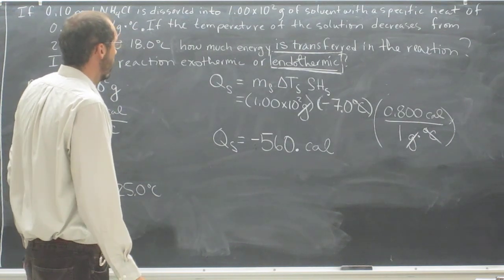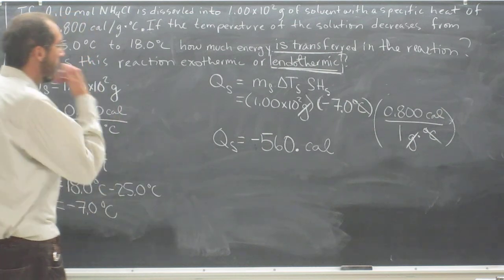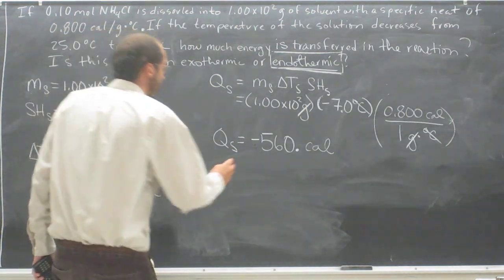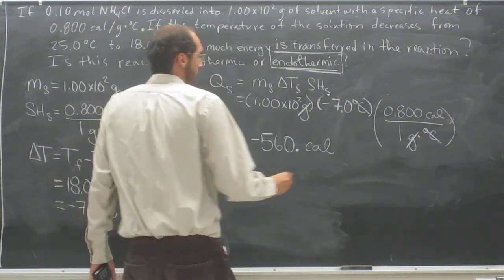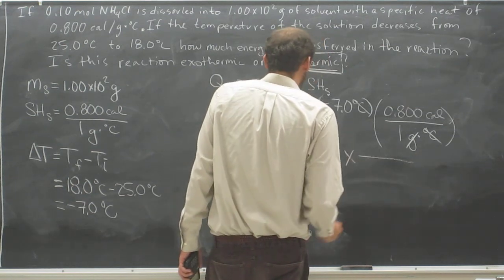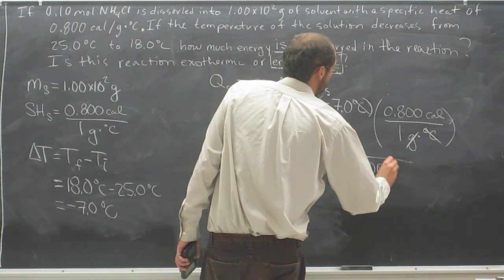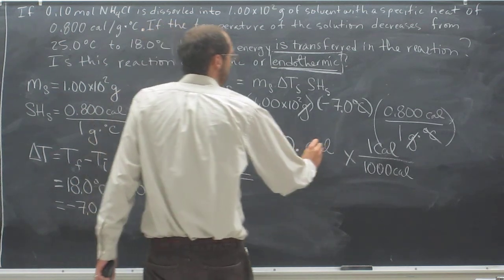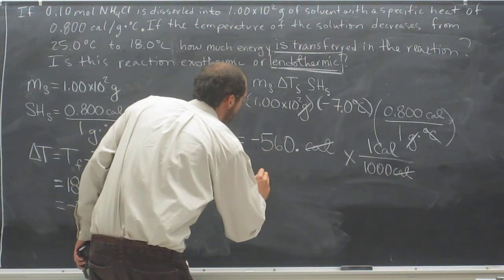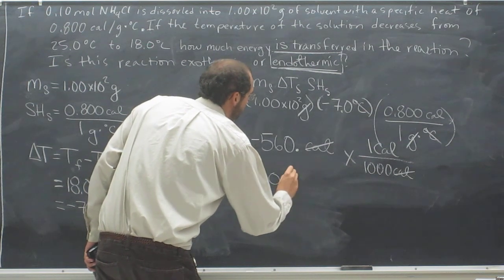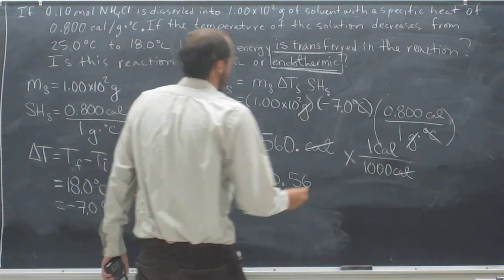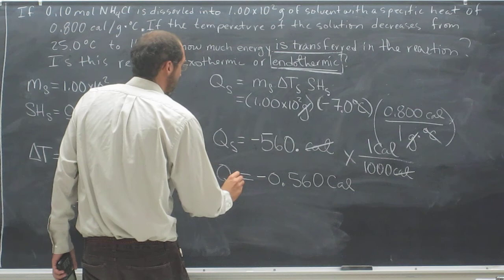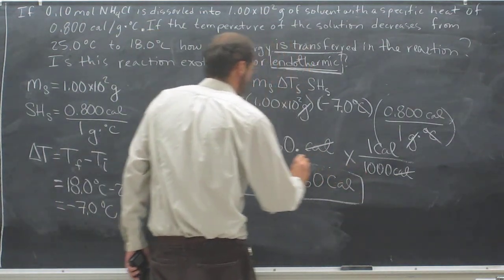The other thing that we want to know is we can extend this problem. If it said give it in kcals or give it in big C cals, we could just say that times 1,000 calories per 1 big C cal. Cals cancel and we get negative 0.560 nutritional or big C cals. So that's the Q of the solvent.